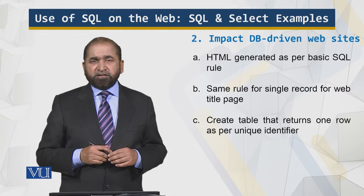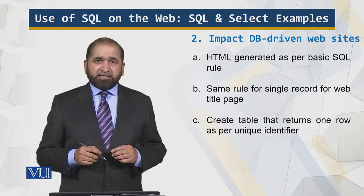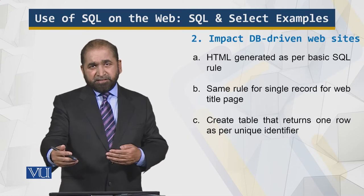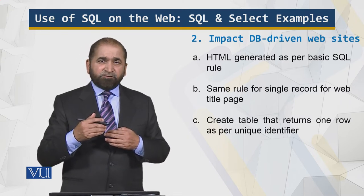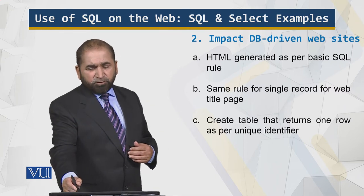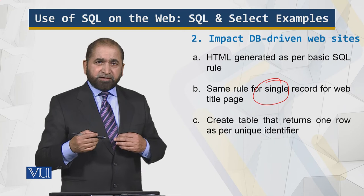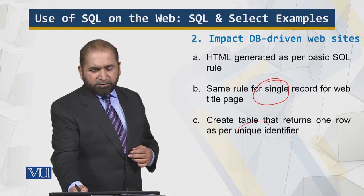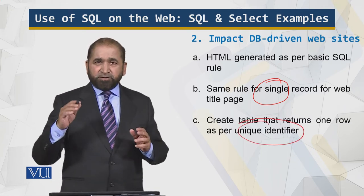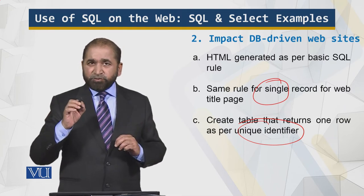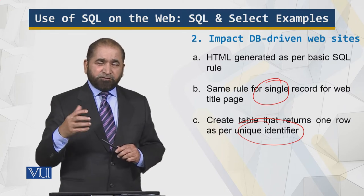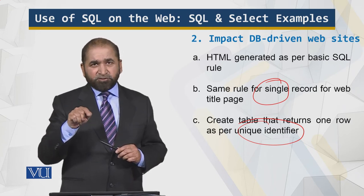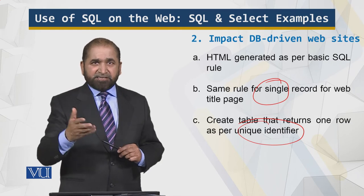So what is the impact of database-driven websites? HTML is generated as per the basic SQL rule — retrieve all that is relevant, and then perform the operation on them. The same rule applies for a single record. For example, if I have to put labels on the web page to create a table that returns one row per unique identifier, I ensure that whatever is displayed on the web page has a unique identifier, and all the records meeting that criteria are retrieved, then individually selected and displayed as part of the web page.